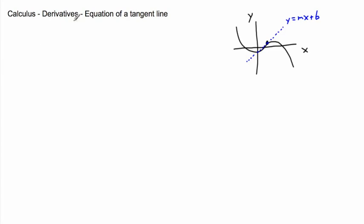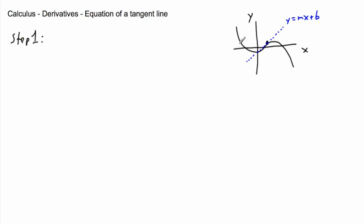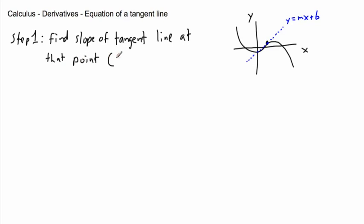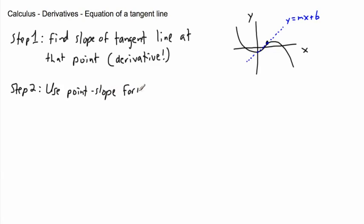So if I want the equation of this tangent line, there are some steps. Step one — and you can probably guess it — is to find the slope of the tangent line at that point. We do that by taking the derivative. Step two is to use that slope along with a point, using what's often called point-slope form.